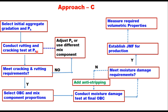If the mixture does not satisfy the criteria for rutting and cracking, we adjust the PB or use different mix components such as aggregate gradation. If it meets the requirement, you select the OBC and mix proportions at this stage — your rock gradation and OBC are selected. Then at this OBC and component proportions, you conduct the moisture damage test. If it satisfies, you get the job mix formula. If not, you add an anti-stripping agent, repeat the test, and once you get the job mix formula, you measure the volumetric properties required for field quality control.